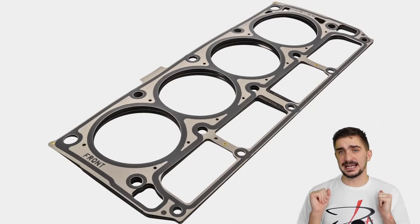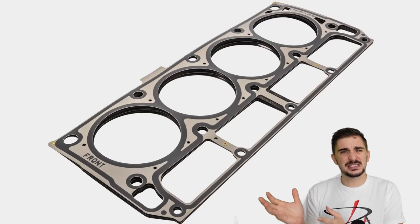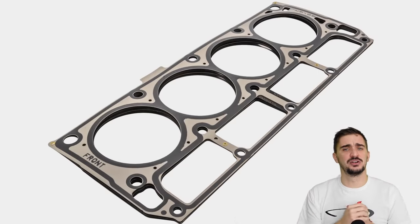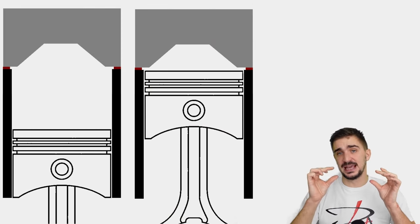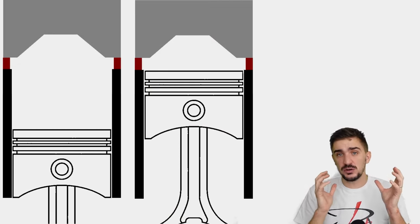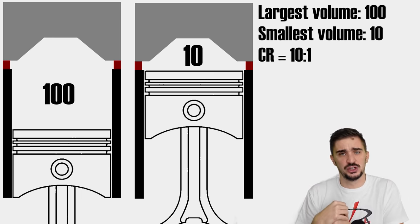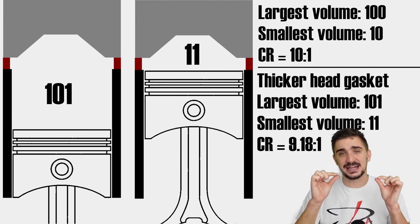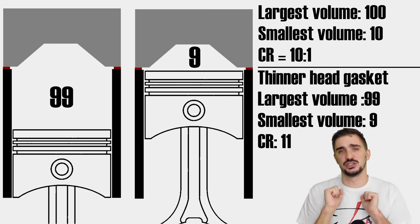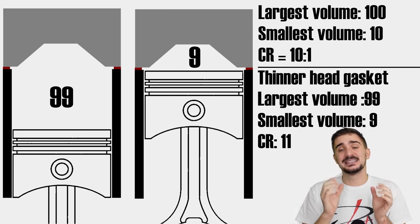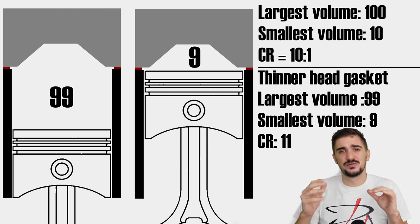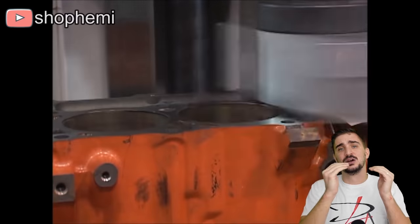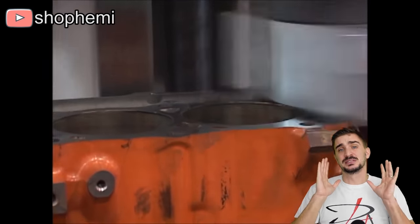The next thing we can change is the head gasket, and this is probably the most cost-effective and simplest way to modify your compression ratio. By changing the thickness of the head gasket, we change the cylinder volume, which changes the compression ratio. A thicker head gasket will reduce the compression ratio, while a thinner head gasket will increase it. But be warned — a thinner head gasket is less capable of absorbing imperfections in your block deck or cylinder head surface.